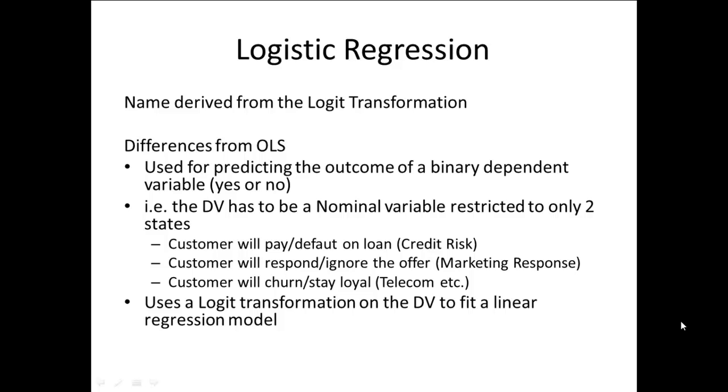For example, in ordinary least squares regression, the dependent variable is a continuous value ranging from minus infinity to plus infinity - for example, what's the price of a house, how much can the customer pay, or what is the average time taken to complete a particular task. But in these cases that we just discussed, it's a binary dependent variable where we are looking at only two particular states: on/off, one/zero, yes or no. In these cases, a logistic regression makes more sense.